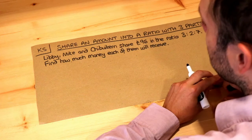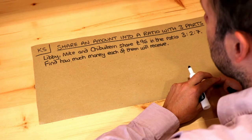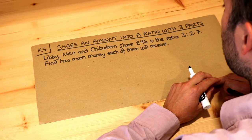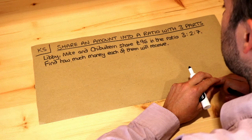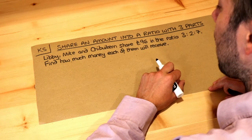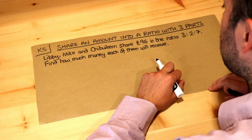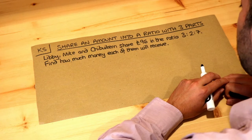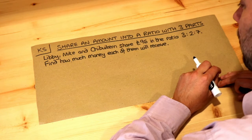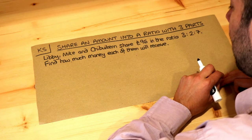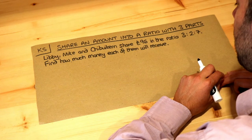Hello and welcome to Dr. Ross Mass's key skill video on sharing an amount in a ratio with three parts. Here's the question: Libby, Mike and Chibokam share £96 in the ratio three to two to seven. Find how much money each of them will receive.